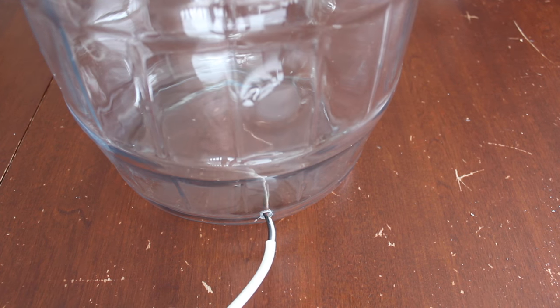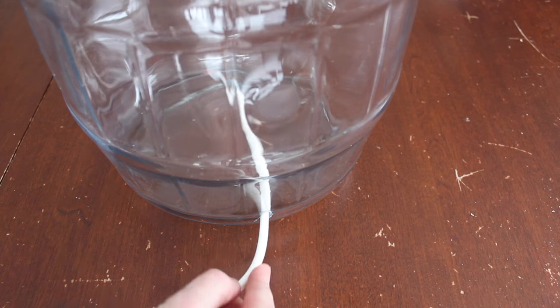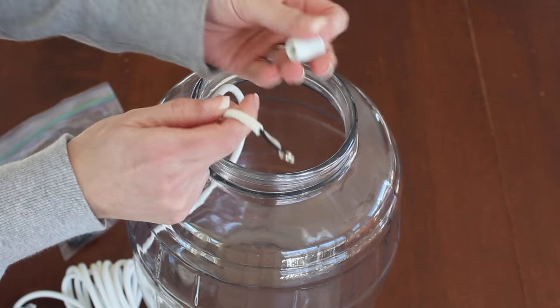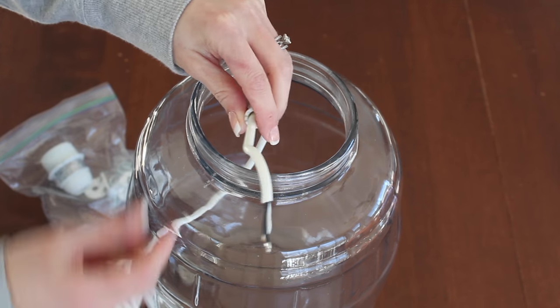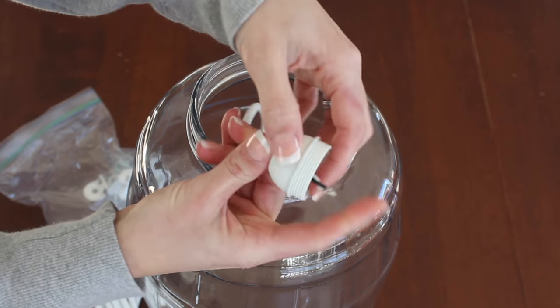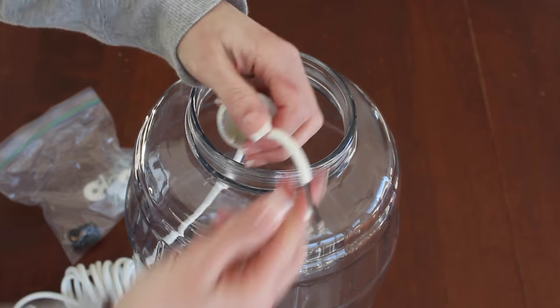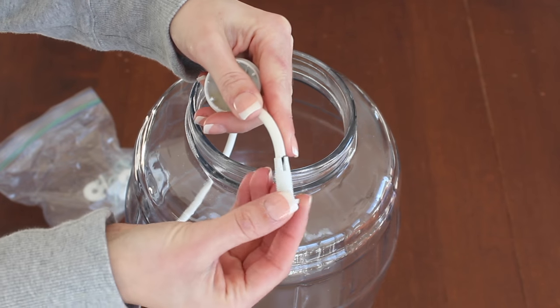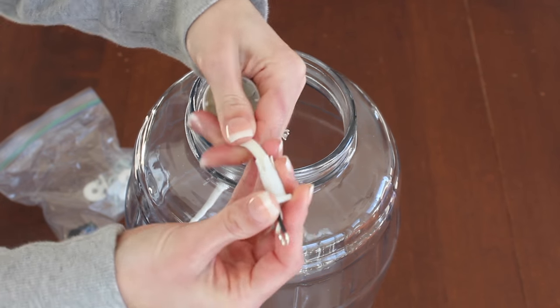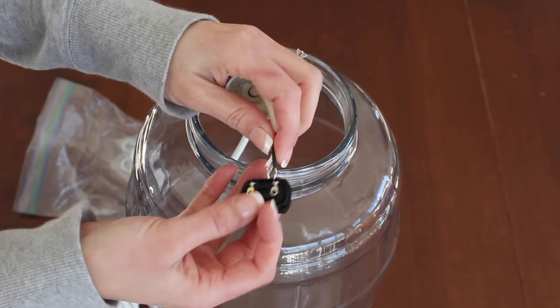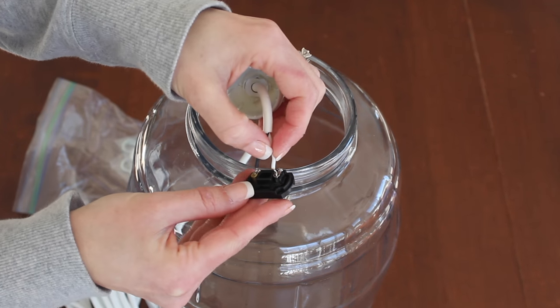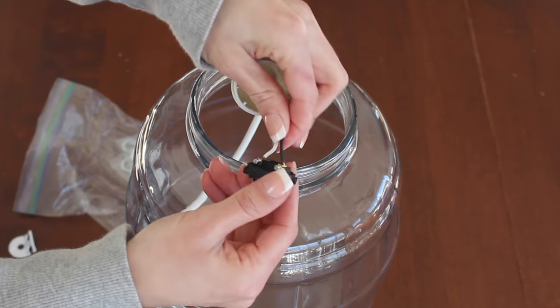Then I'm running my cord through the hole that I drilled in the glass. And I'm putting together my lamp hardware now. This is actually a hanging lamp that I got from Ikea, and I converted it into use for this lamp using a tutorial that I found on YouTube.